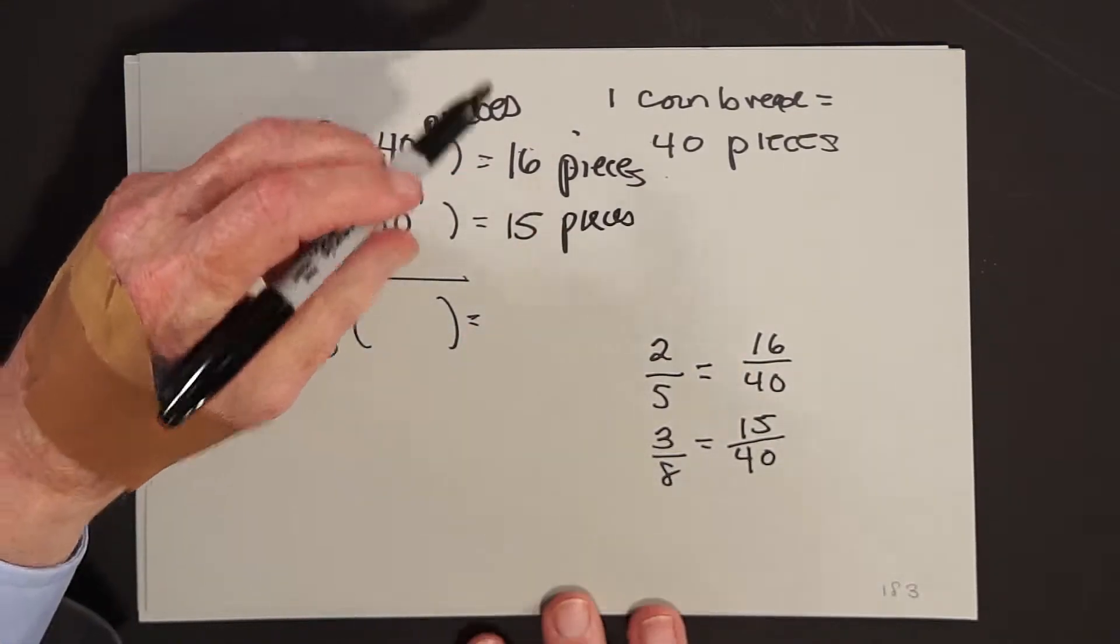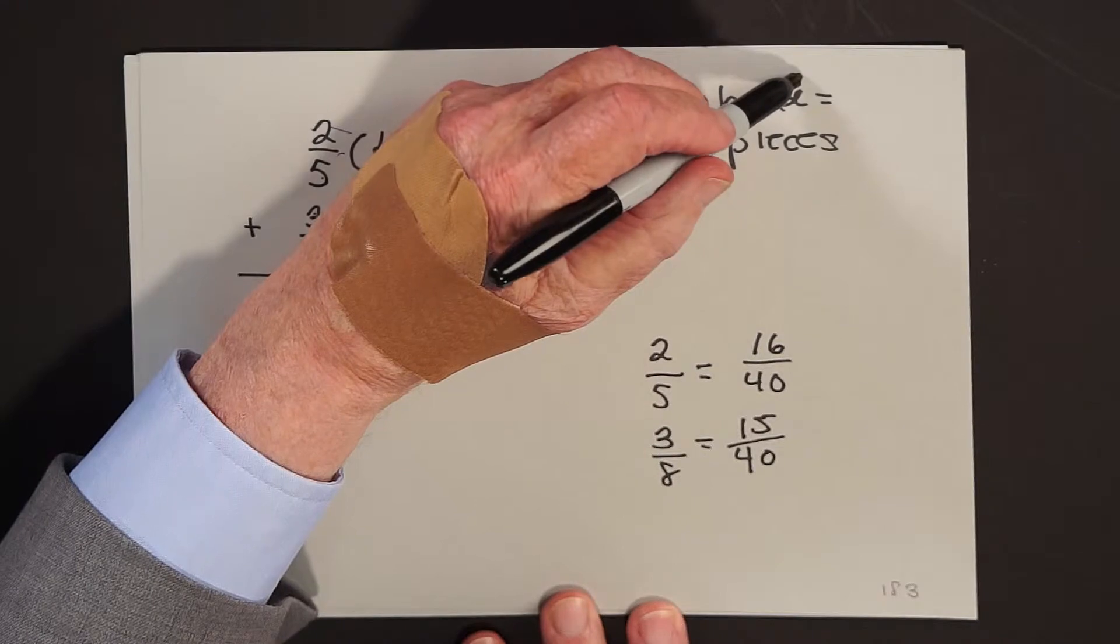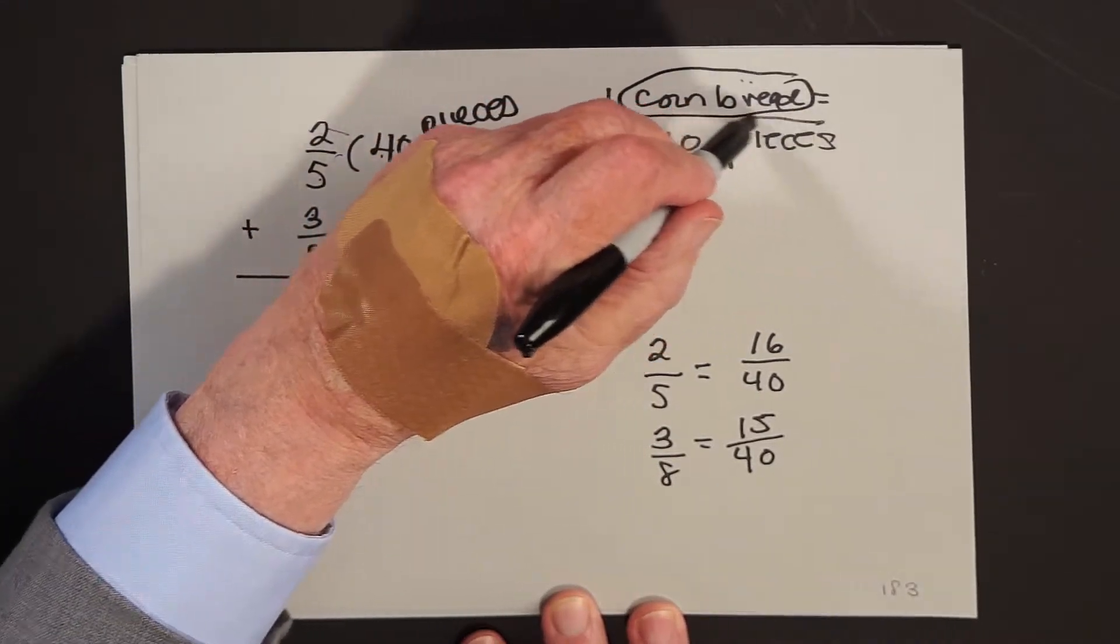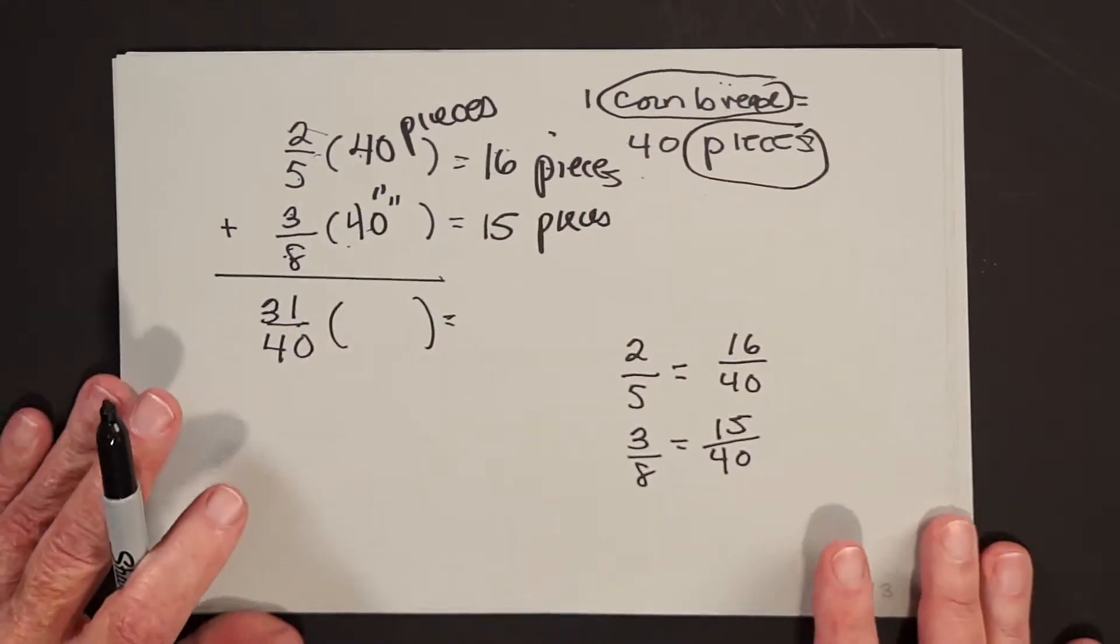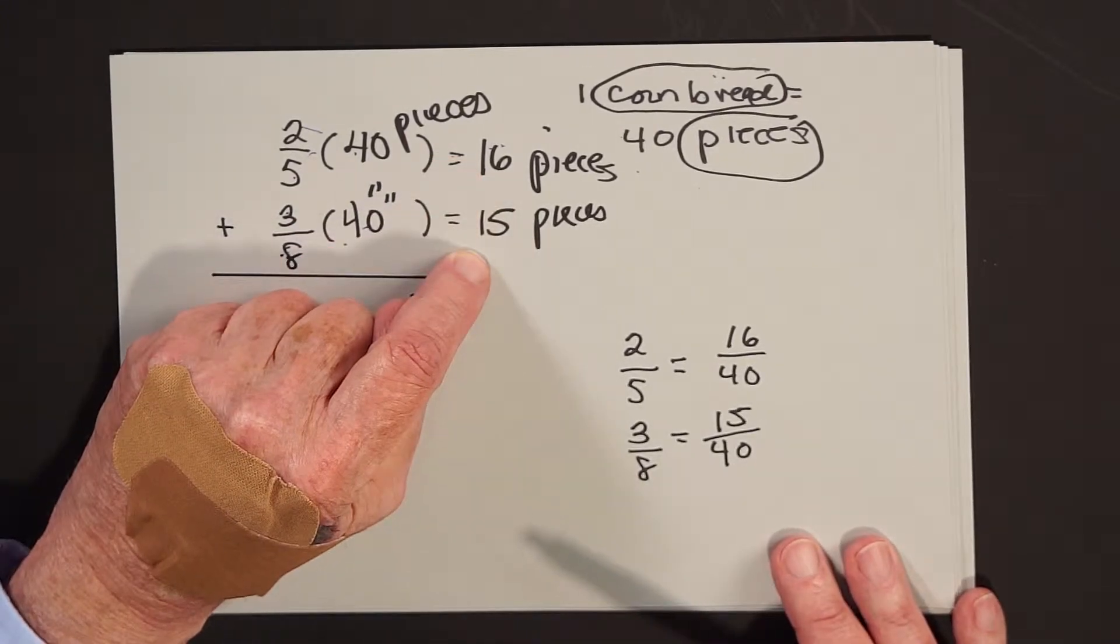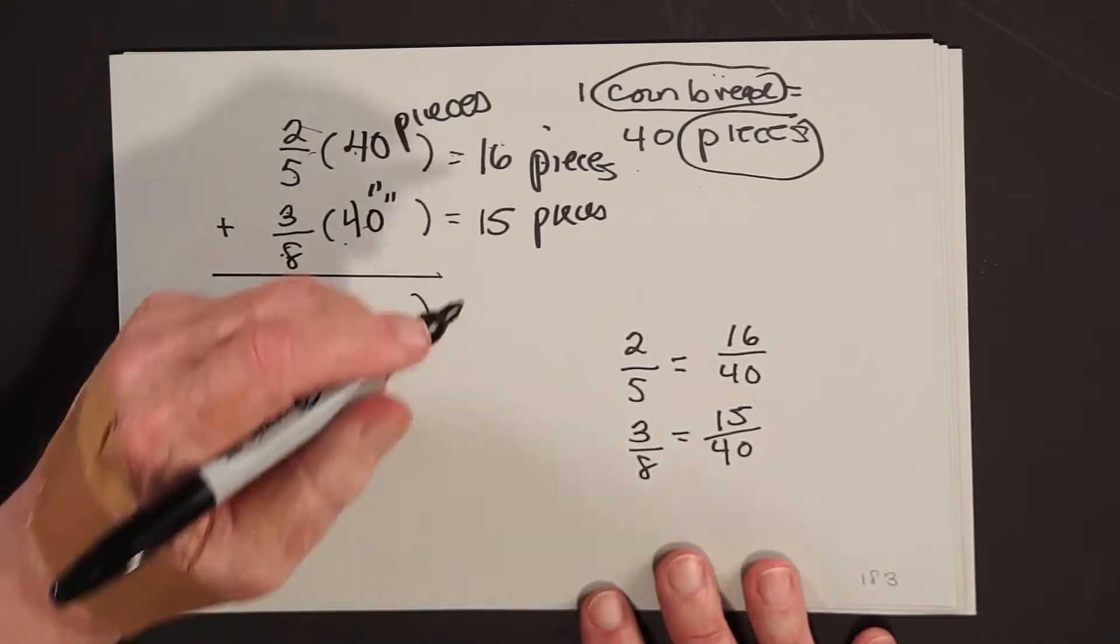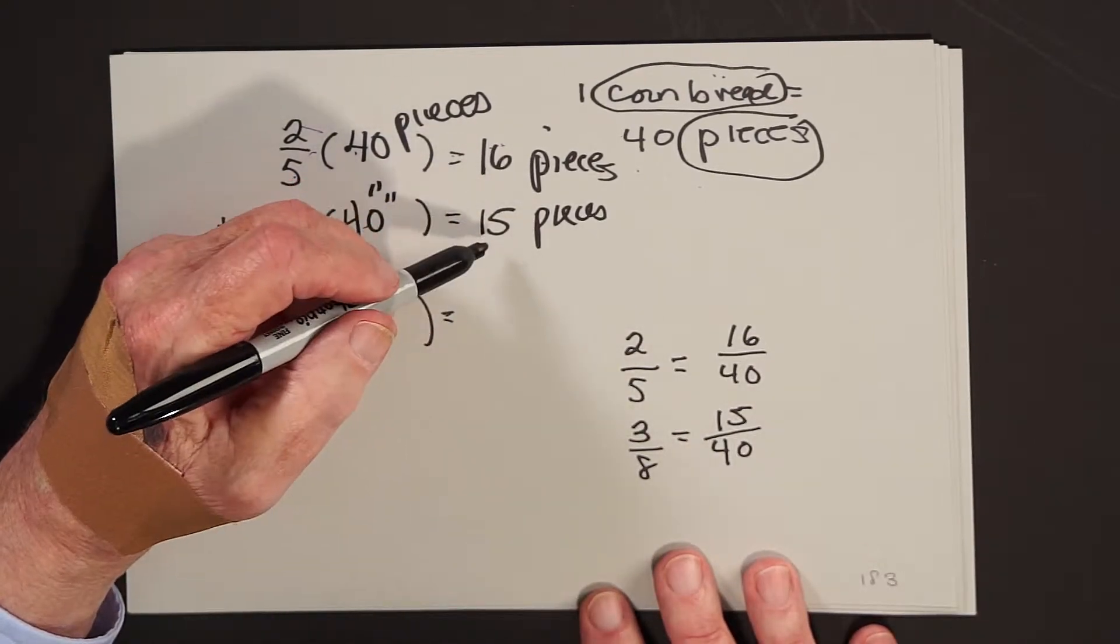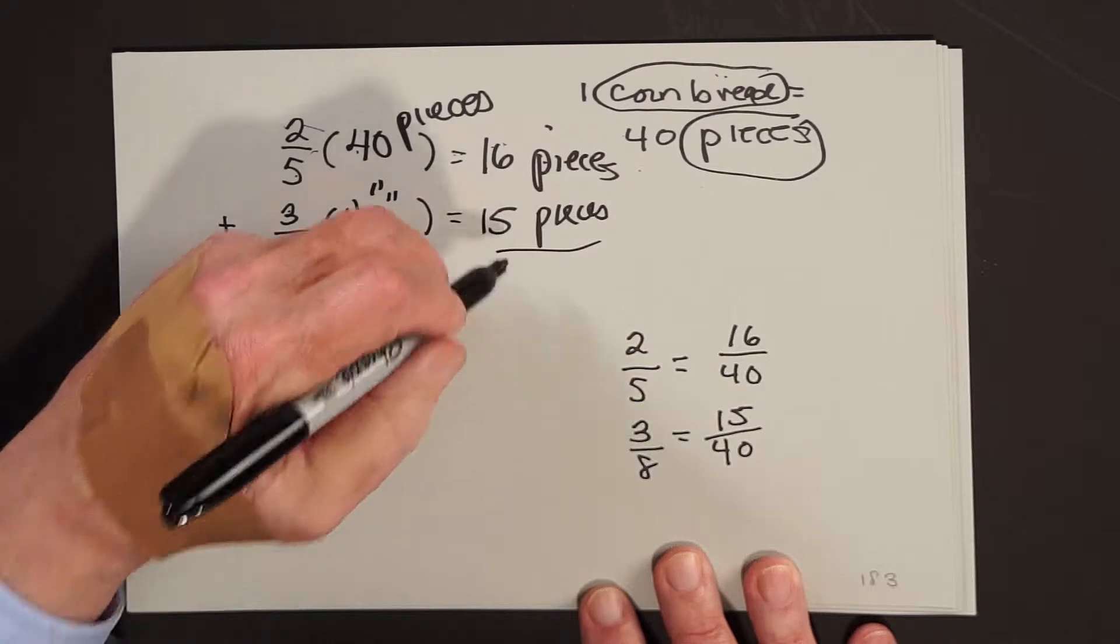So if we change the nouns, catch this now. If we change the nouns from cornbreads to pieces, there are no more fractions here. We're adding sixteen pieces and fifteen pieces. And since the pieces are all the same size, we can add the adjectives. It's thirty-one pieces.